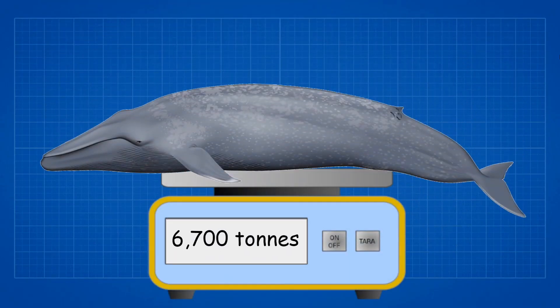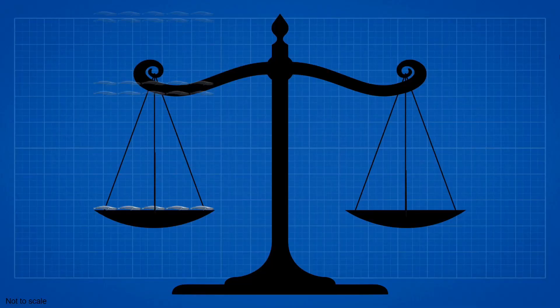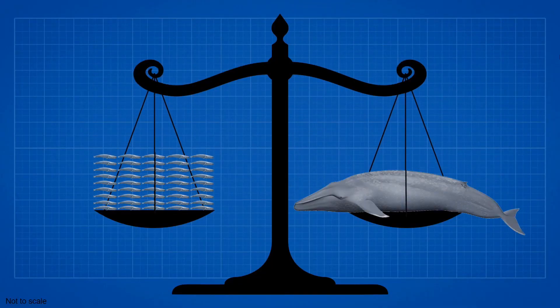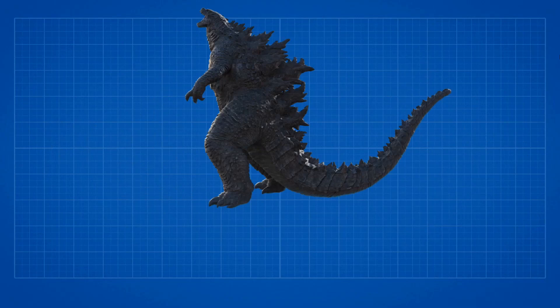So according to Ethan's calculations, the biggest animal in the world could weigh 45 blue whales, the largest animal ever on Earth, or 10,800 people. But what about Godzilla? Is he heavier than 6,700 tonnes? Definitely.